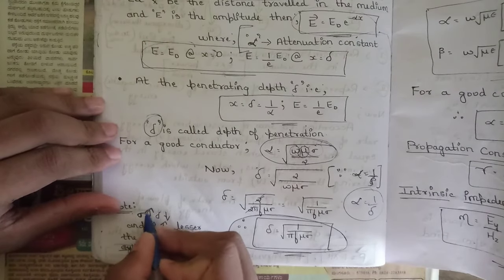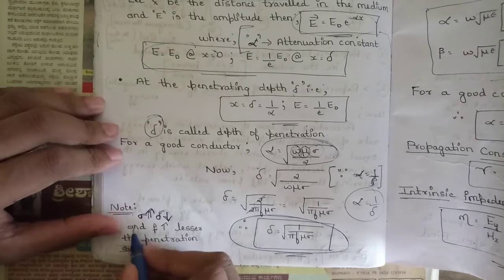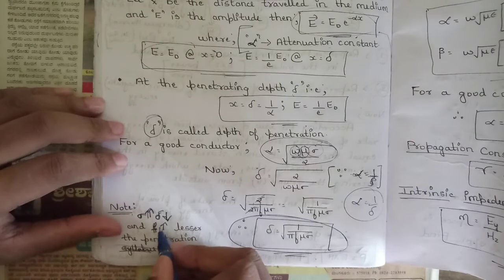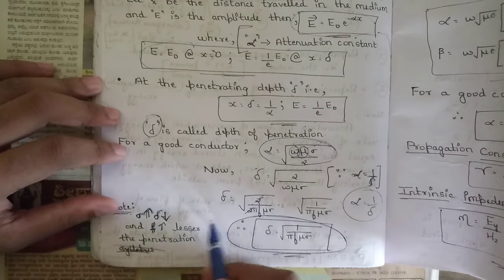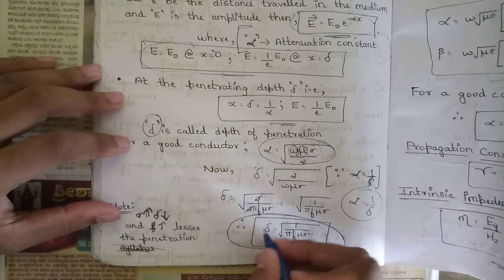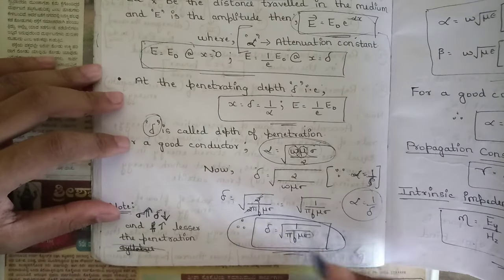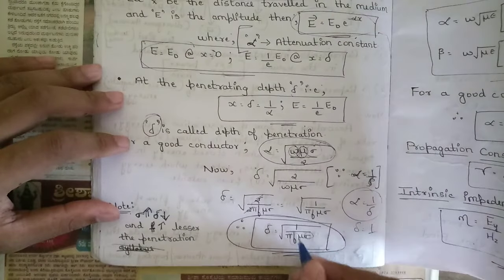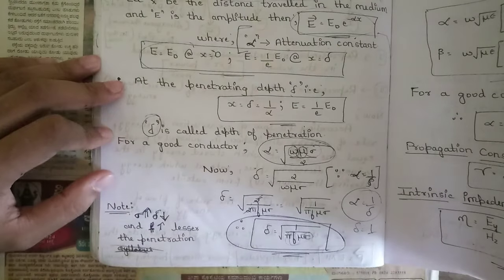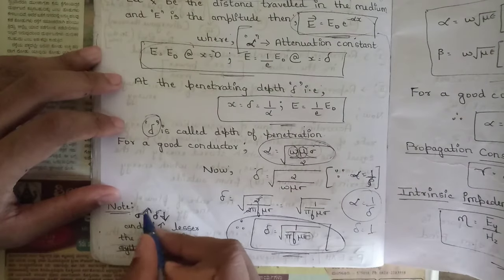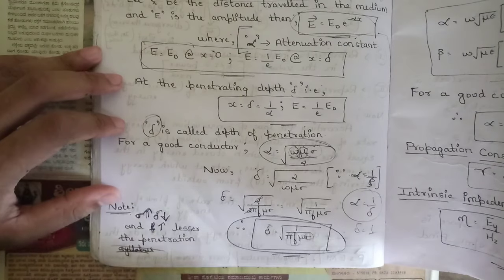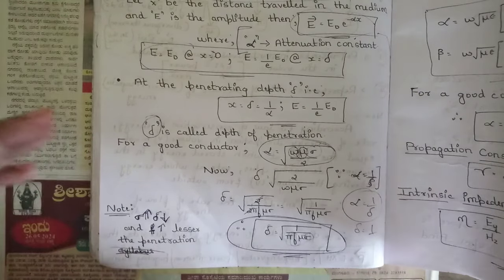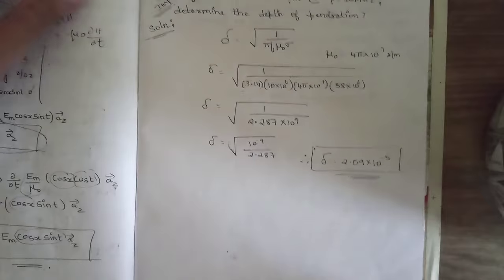A few important observations: whenever conductivity increases, the depth of penetration decreases. Also, when frequency increases, the depth of penetration decreases. This is because δ = √(1 / πfμσ), so δ is inversely proportional to both σ and f. This concludes the derivation of skin effect and depth of penetration.